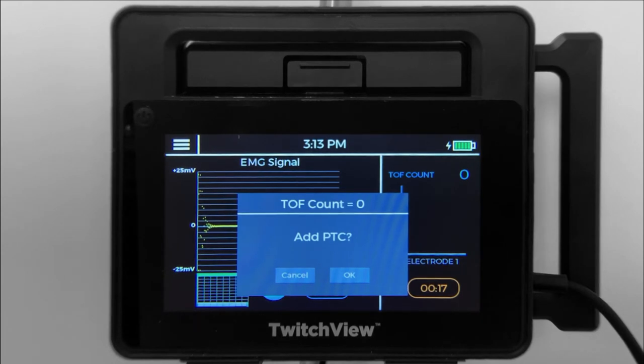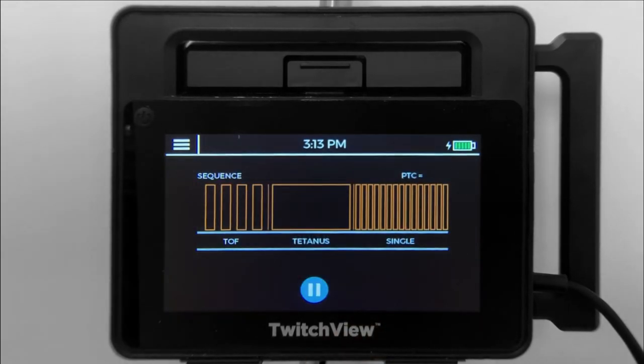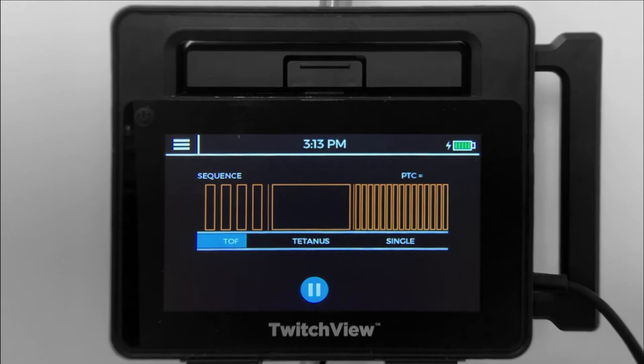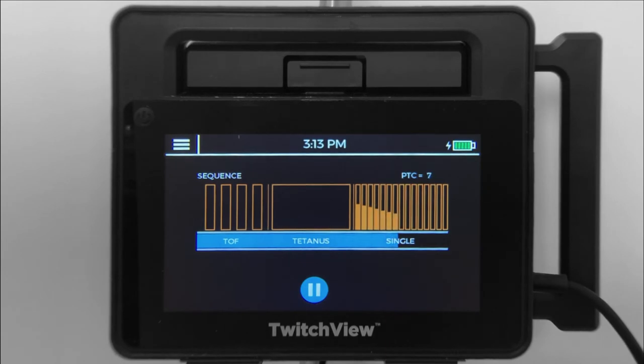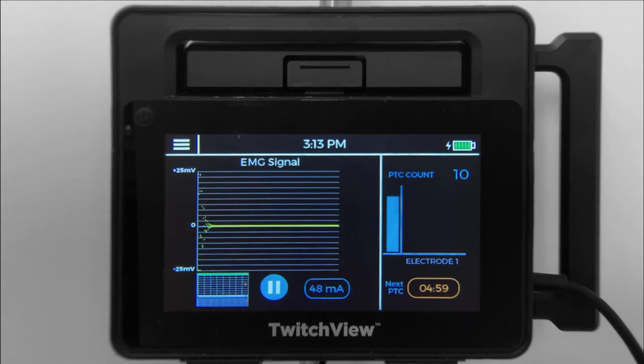Prior to every post-TATANIC measurement, the monitor runs a TRAIN-4. If there is no response, the monitor will proceed with TATANIC stimulation followed by single twitches. The post-TATANIC count can range from 0 to 15. A post-TATANIC count of 0 represents profound paralysis, and a post-TATANIC count of 15 indicates that the patient will respond to TRAIN-4 stimulation soon.